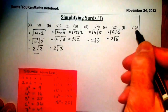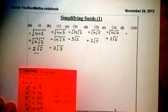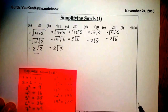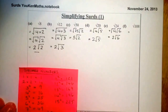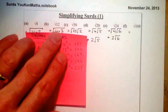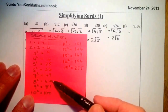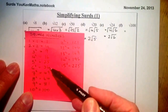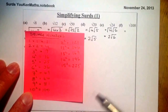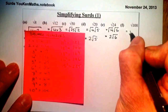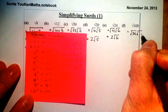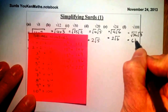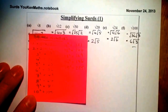Now for this one: half of 108 is 54. Looking through the square numbers I've generated, from experience I know I can use 36, since 3 times 36 gives me 108. So I write root 36 times root 3. Taking the square root of 36 gives 6, so the final answer is 6 root 3.